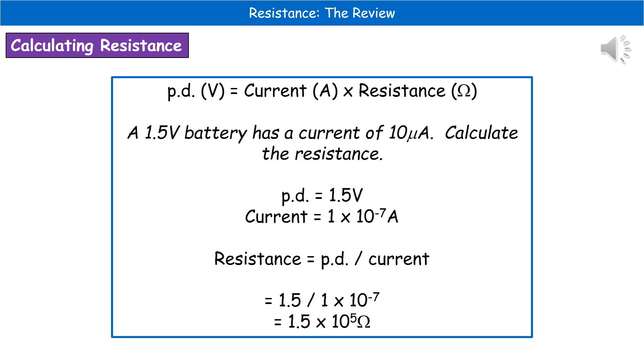The kind of question we could be asked here is a 1.5 volt battery has a current of 10 micro amps, calculate the resistance. The first thing we need to do is convert to our standard units. We don't use micro amps as a standard, we use amps. So we need to change our micro amps into amps, and that gives us a current of one times 10 to the minus seven.